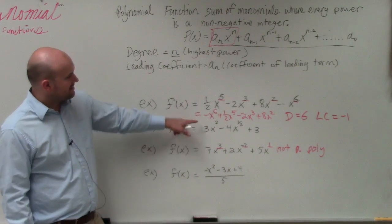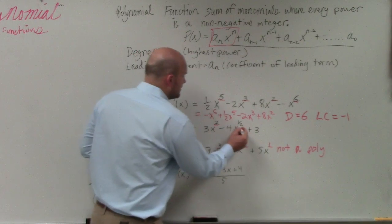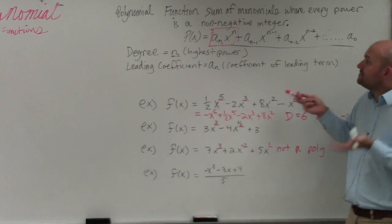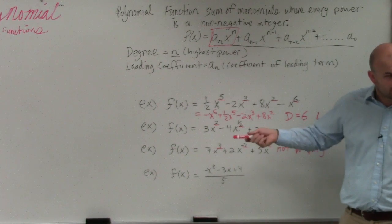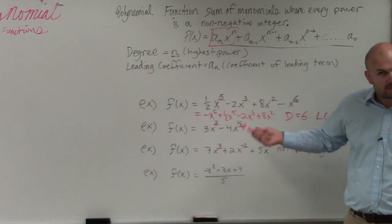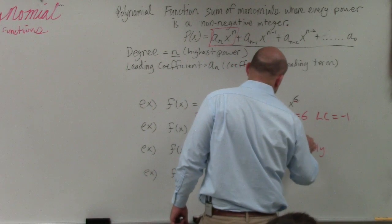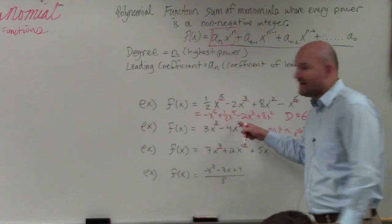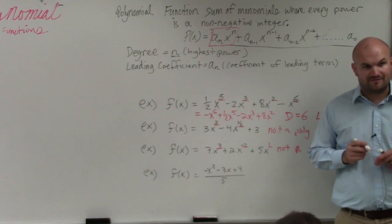So now let's go back to example number two. Example number two, if we look at their powers, we can see that we have a fraction. Again, the definition says non-negative integers. One half is not an integer. Correct? So, not a polynomial. I thought it was. Why? One half is not an integer. One half is not an integer.